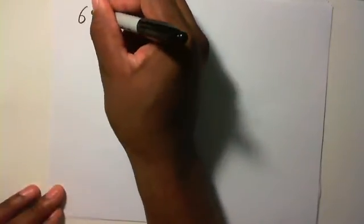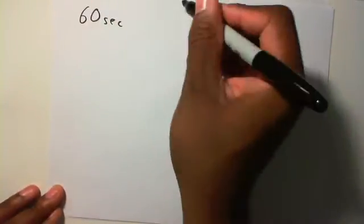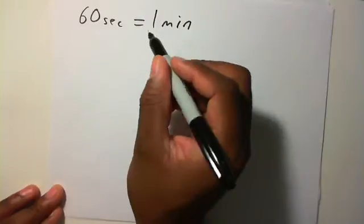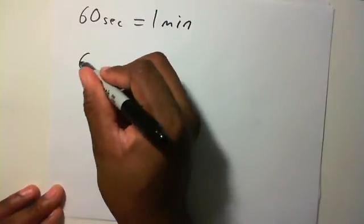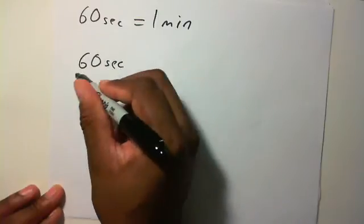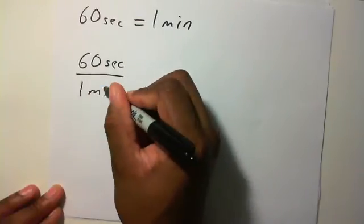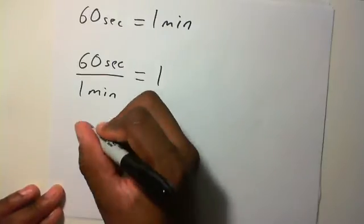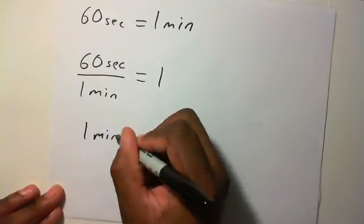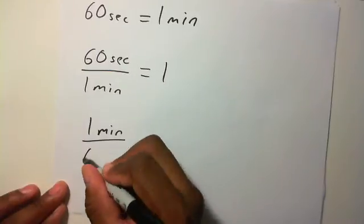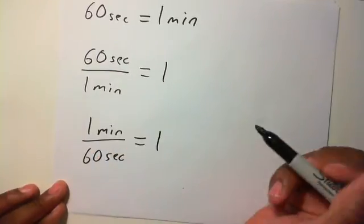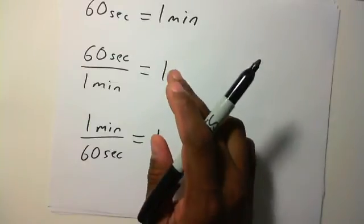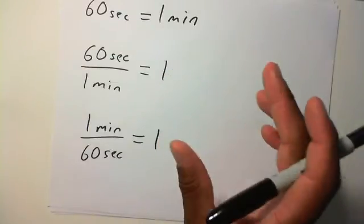We know that 60 seconds equal one minute. If this is true, that means 60 seconds over one minute equals one. Same as one minute over 60 seconds equals one. We're going to use this type of relation to do unit analysis.